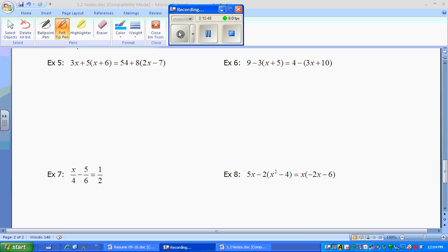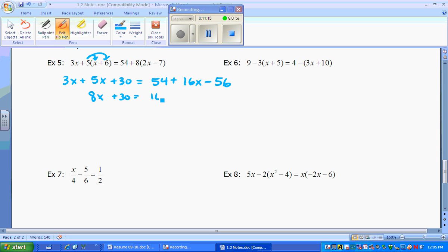We're going to finish this lesson by solving simple equations. So the first one, we're going to distribute the 5. So we get 3x plus 5x plus 30 equal to 54 plus 16x minus 56. Simplify both sides. So this side becomes 8x plus 30. Over here, we get 16x and negative 2. We'll minus the 8x over. At the same time, we'll add the 2. So 32 is equal to 8x. So x ends up equaling 4.